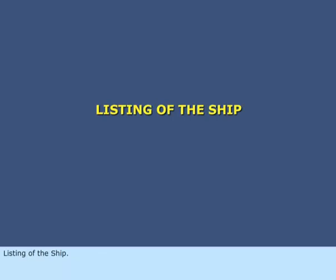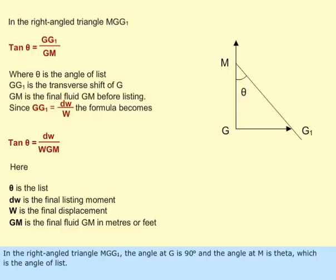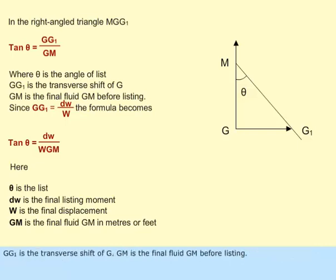Listing of the ship: In the right-angled triangle MGG sub 1, the angle at G is 90 degrees and the angle at M is theta, which is the angle of list. GG sub 1 is the transverse shift of G. GM is the final fluid GM before listing. Tan theta equals GG sub 1 divided by GM.